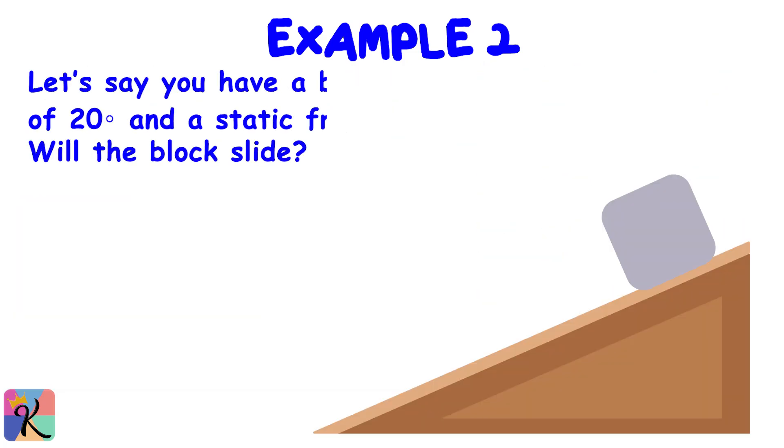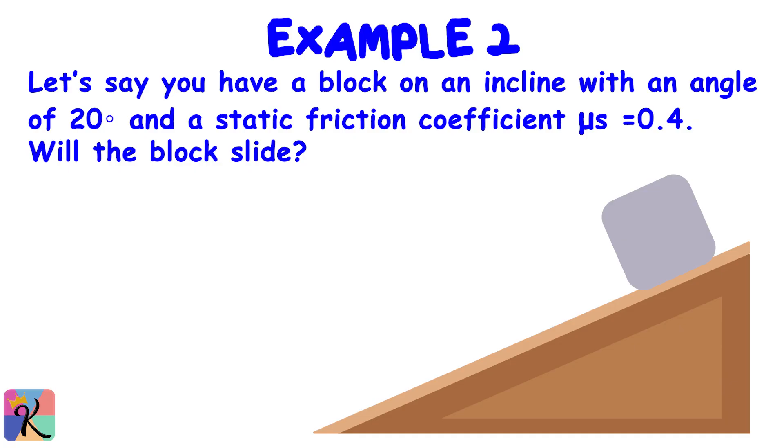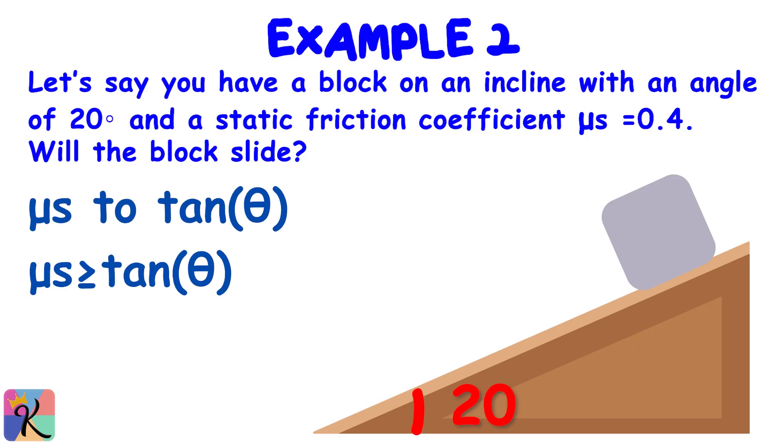Let's say you have a block on an incline with an angle of 20 degrees and a static friction coefficient μs = 0.4. Will the block slide? To find out, compare μs to tan theta. If μs is greater than or equal to tan theta, the block stays put. Calculating tan(20°) = 0.364, which is less than μs = 0.4. So static friction wins and the block doesn't slide.